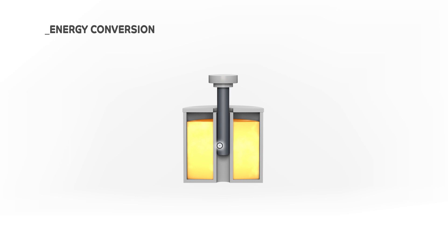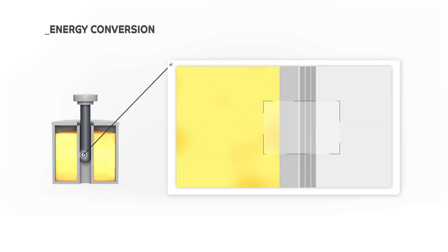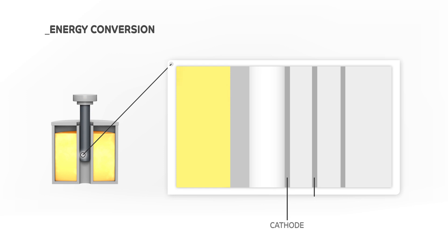The Hybrid Thermionic Photovoltaic Converter is composed of three main elements: the cathode, the anode, and the photovoltaic cell.